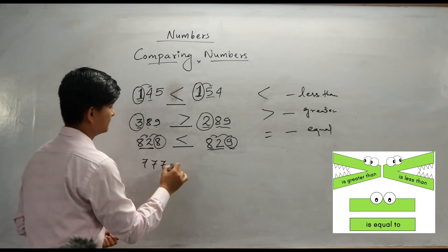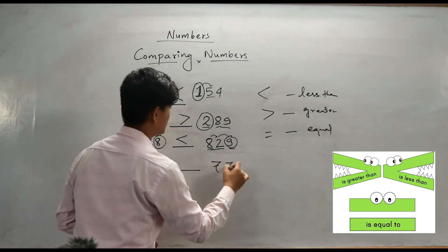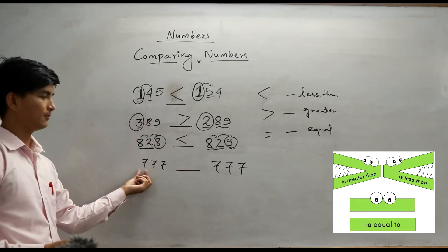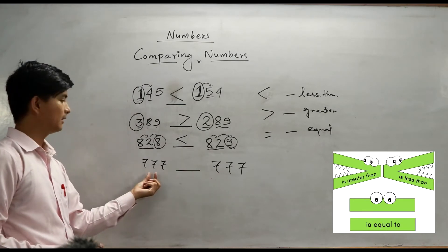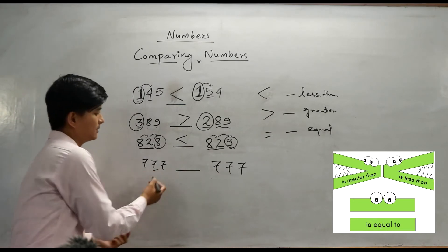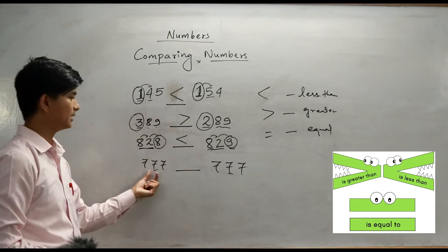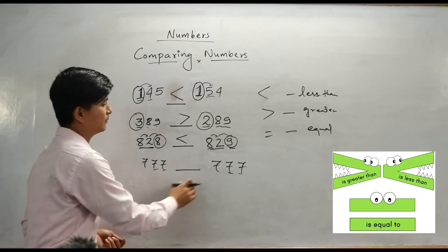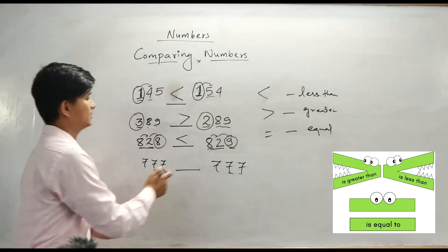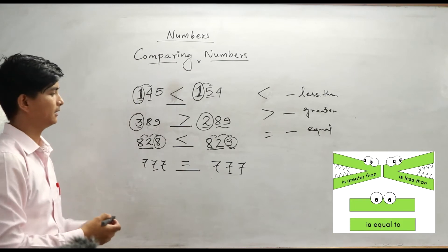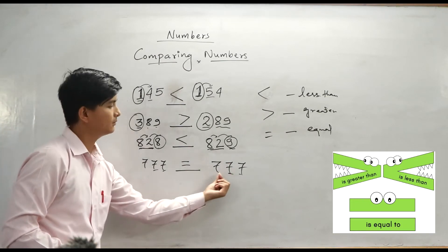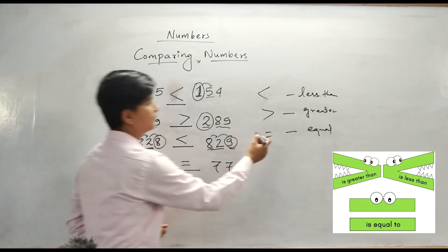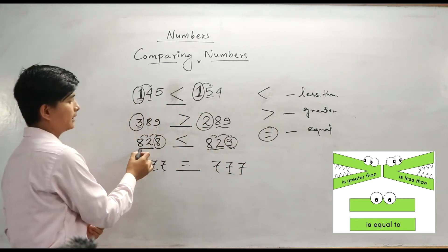Next example: 777 compared to 777. In the hundreds place we have 7 and 7. In the tens place we have 7 and 7. All the numbers are equal, so we put the equal sign. When all three places — hundreds, tens, and ones — are equal, only then we put the equal symbol.